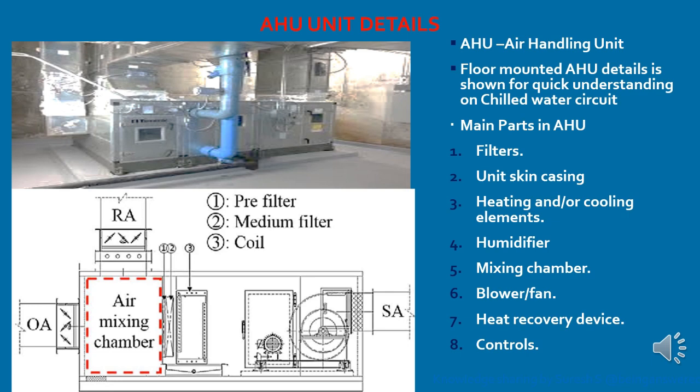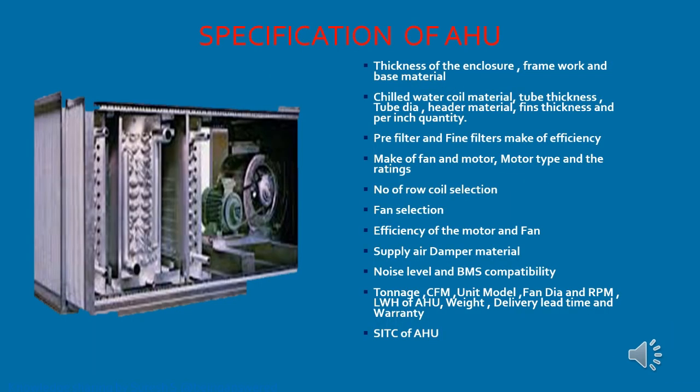Next, a humidifier — whenever we need to add humidity to the air, the humidifier will be used. If humidity needs to be removed from the air, a dehumidifier will be used. The mixing chamber is where fresh air and return air get mixed before passing through the filter. A blower or fan pushes the chilled air into the ducting elements so it reaches the air-conditioned area. A heat recovery device is also used in the AHU, along with controls — electrical control dampers and all related controls.